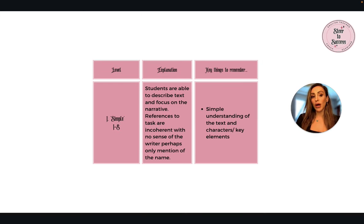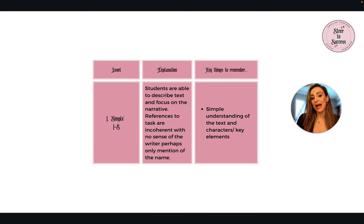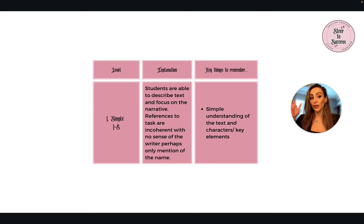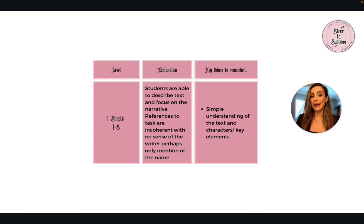Level one is referred to as being simple. At this level, students are able to describe the text and focus on the narrative. References to the task are incoherent with no sense of the writer — perhaps only mention of the name. This is for marks one to five. Obviously most students are hoping to get above this, but this is what level one looks like: a simple understanding of the text and characters or key themes.